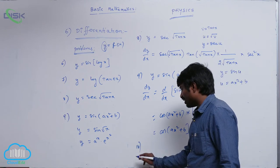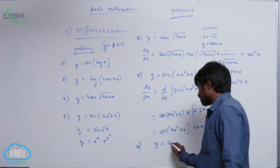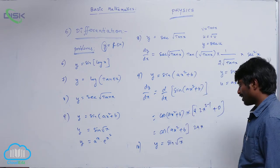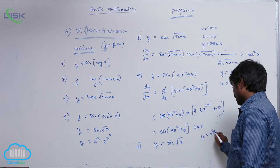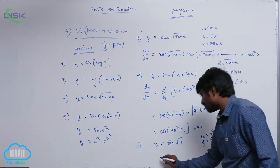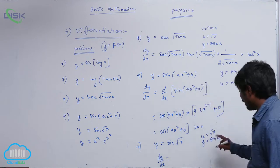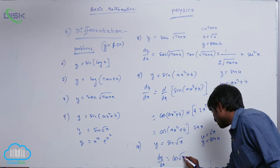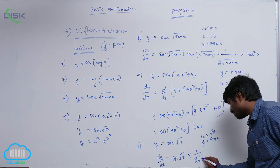The tenth problem is y is equal to sin of root x — very simple. Here u is equal to root x and y is equal to sin u. Differentiation dy by dx is equal to dy by du, which gives cos u, where u is root x. Again, root x differentiation is 1 by 2 root x. That is all.